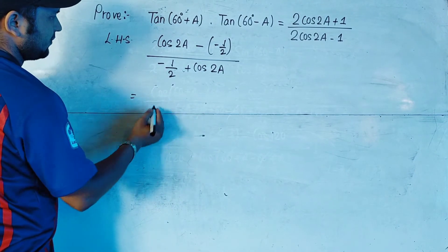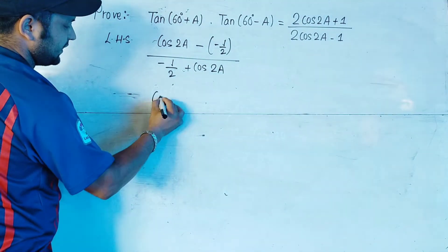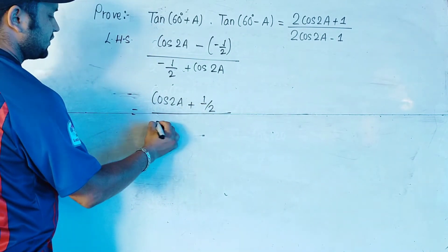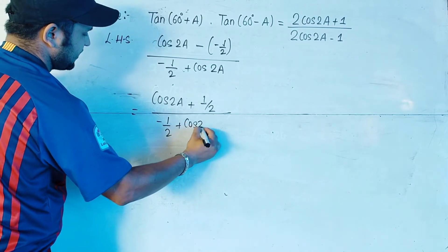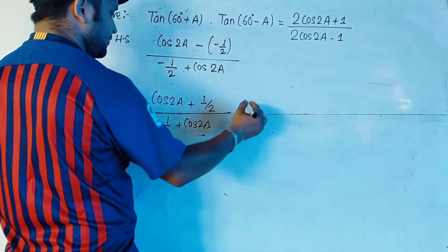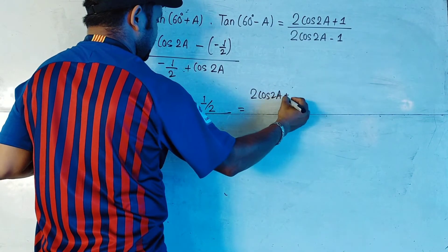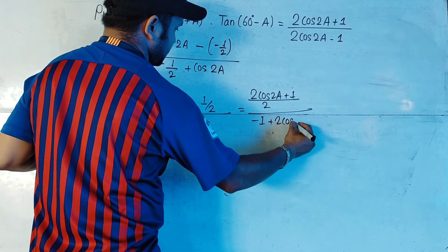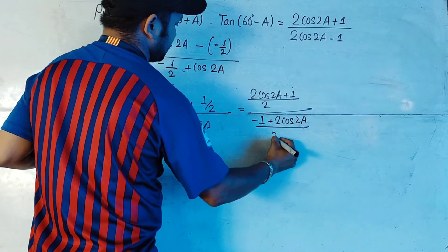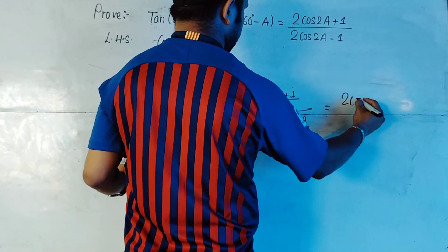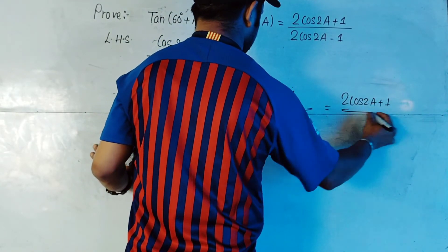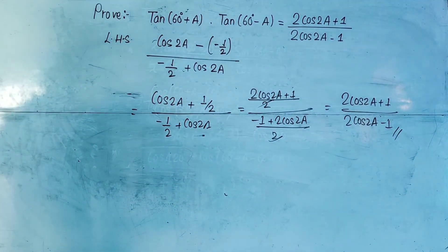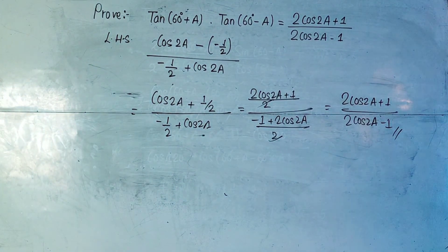Now by taking LCM we'll get our answer. We have cos(2a) minus (-1/2) which gives cos(2a) plus 1/2, and in the denominator -1/2 plus cos(2a). Taking LCM of 2: numerator becomes 2cos(2a)+1 over 2, and denominator becomes -1+2cos(2a) over 2. The 2s cancel, leaving (2cos2a+1)/(2cos2a-1), which is our required RHS. This is how we solve the problem. Thank you everyone.